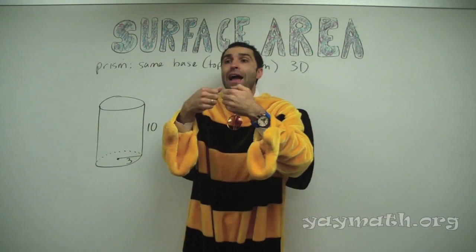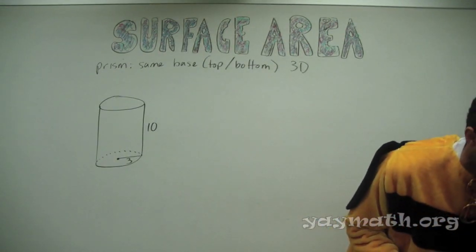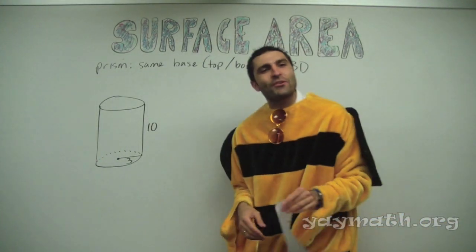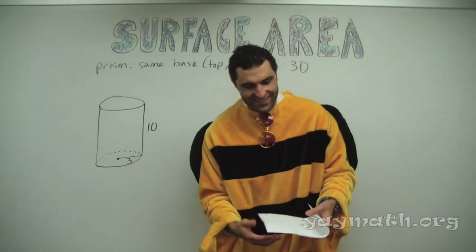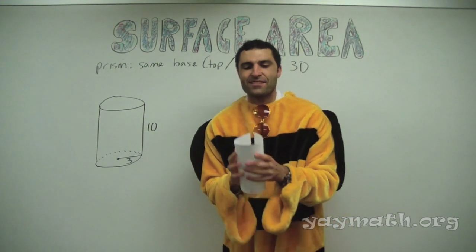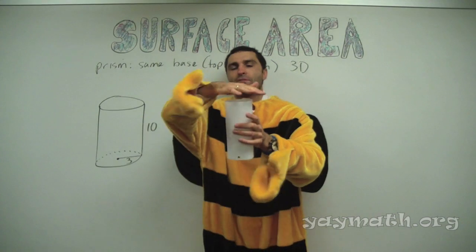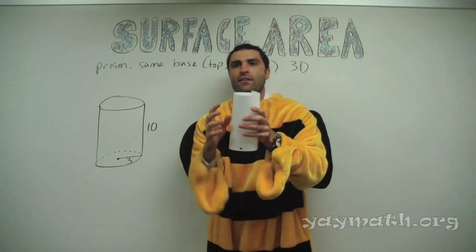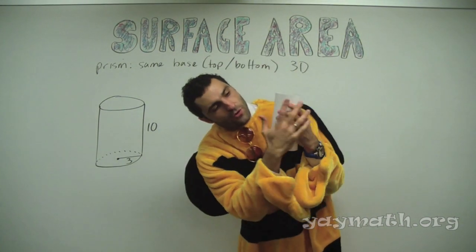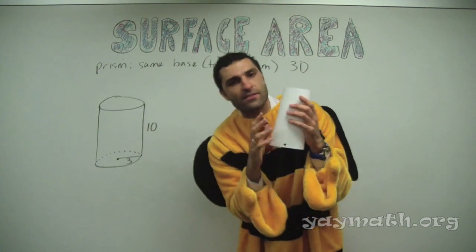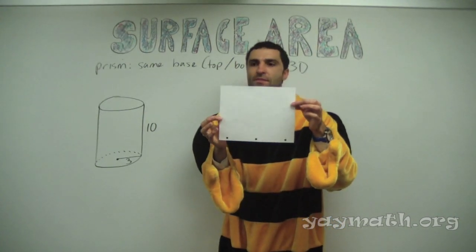Unravel a Coke can — I'm doing product placement now. Unravel a typical can of carbonated beverage. Here is a cylinder. This is a cylinder. The base is here and here. If I wanted to paint this whole lateral face and I opened it, what shape is that?